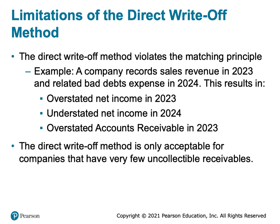What's the limitation of this method? The major issue is that it violates the matching principle, because we're not predicting the bad debt expense in the same year that the revenue is generated. We're not doing a good job of matching our expenses to the revenues they generated, and that causes misstatements of our net income and our receivables. Because of that, the direct write-off method is only acceptable for small companies with very few uncollectible accounts.